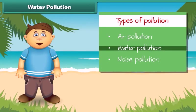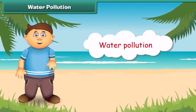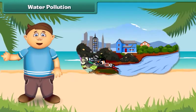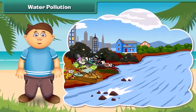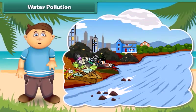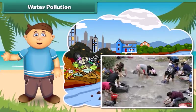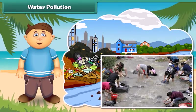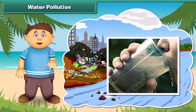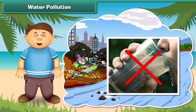Now let's know about water pollution. Like air, water also gets polluted. Look at this river — it is very dirty. It receives sewage from homes and wastes from factories. Some people also wash their clothes and throw waste in it. We should not drink this water, as it contains germs and may result in diseases.